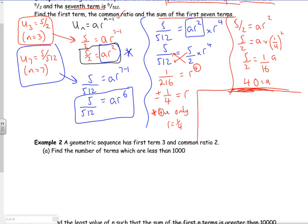Hopefully we got to the point where a was 40. And I was going to work out the sum of the 7th term. So n is 7, a is 40, and r is a quarter.